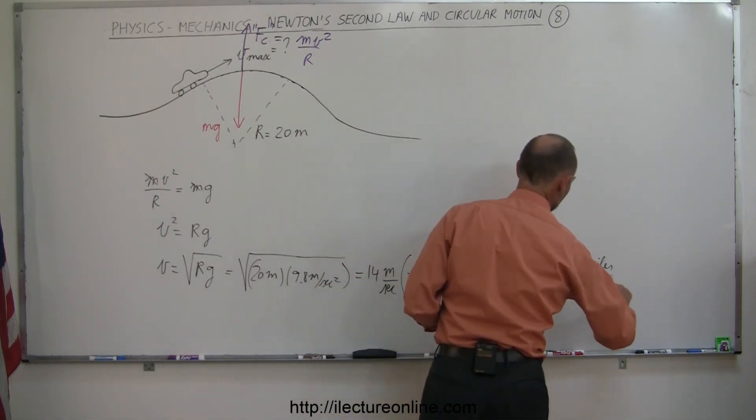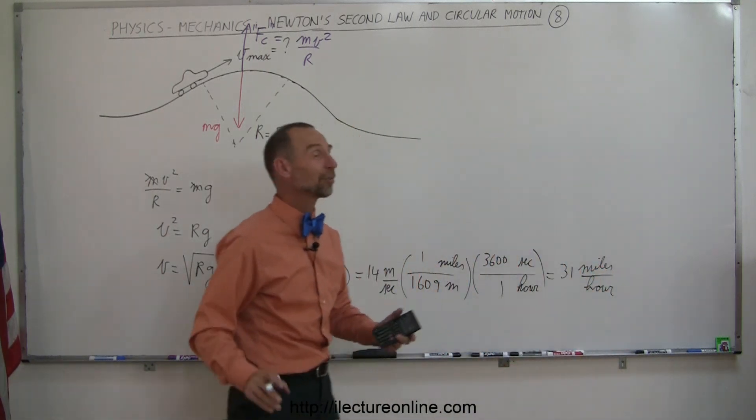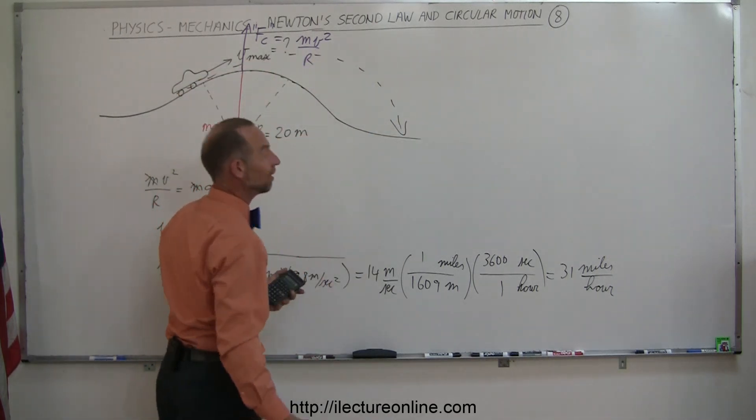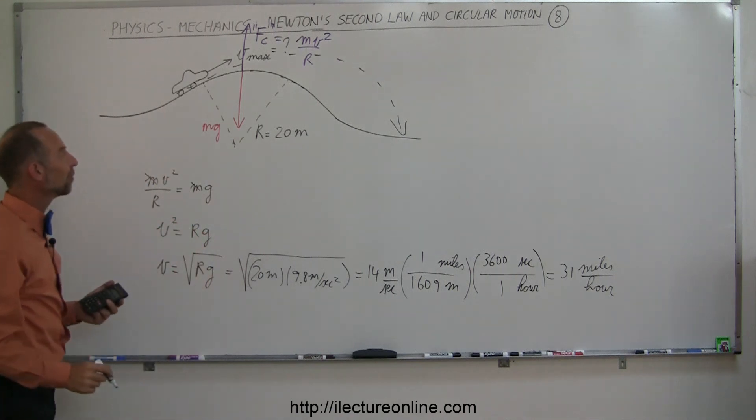Let's say you take this hill at 50 miles per hour. What's going to happen? Potentially a very bad situation at the bottom of the hill. So be careful, don't go too fast. That's how you do that.